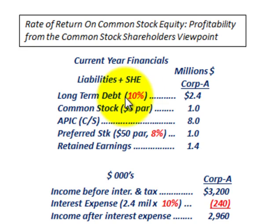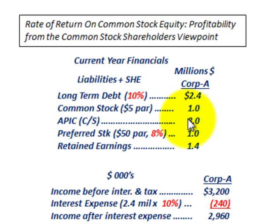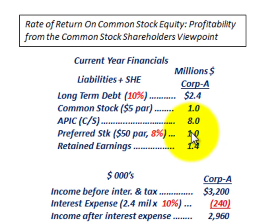For long-term debt, at a 10% interest rate, they're going to have $2.4 million. The common stock par value is at $5 per share, with $1 million sitting in common stock par value. Additional paid-in capital for common stock is $8 million. For preferred stock, it's a $50 per share par value paying an 8% dividend, with $1 million in preferred stock. Retained earnings are $1,400,000.